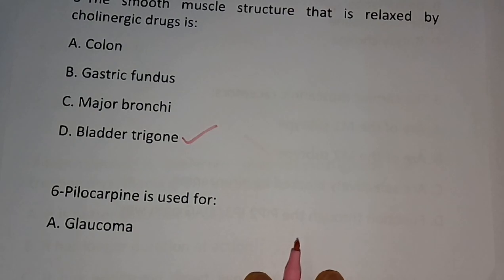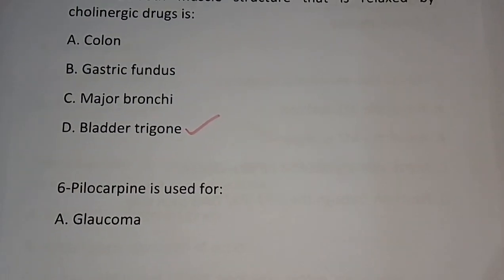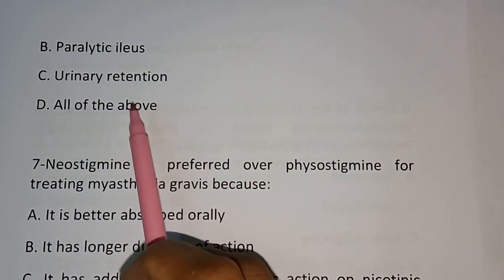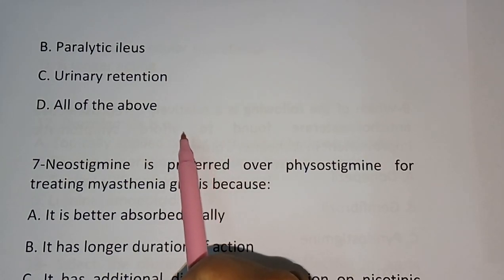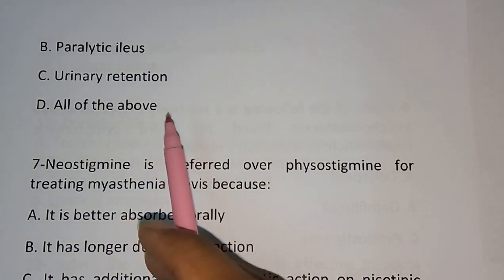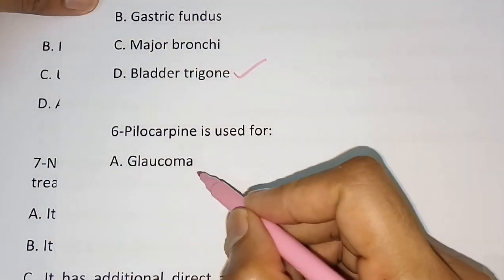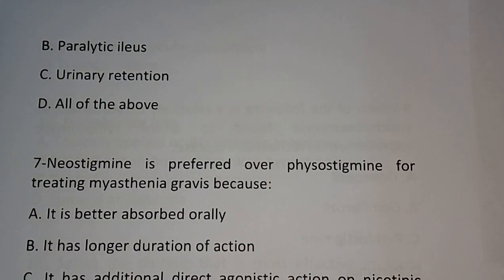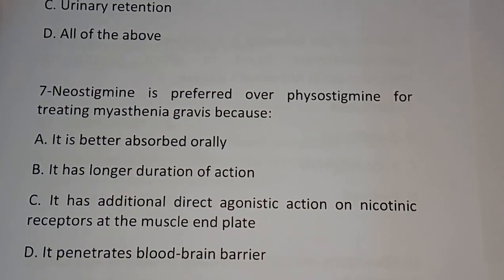Question number six: Pilocarpine is used for — (A) glaucoma, (B) paralytic ileus, (C) urinary retention, (D) all of the above. The correct answer is glaucoma — pilocarpine is used for glaucoma.